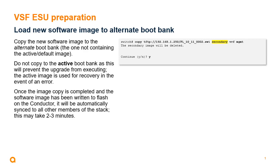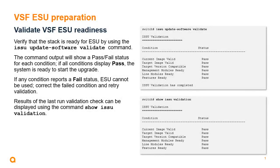Once the new software image has been loaded to the alternate boot bank, allow two to three minutes for the software image to be synced to all stack members. Verify that the stack is ready for ESU using the ISSU update software validate command. The command output will show a pass or fail status for each condition checked. If all conditions display pass, the system is ready to start the upgrade. If any condition reports a fail status, ESU cannot be used — correct the failed condition and try validation again.